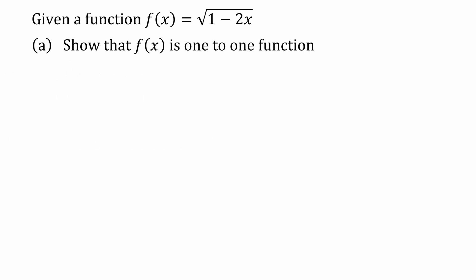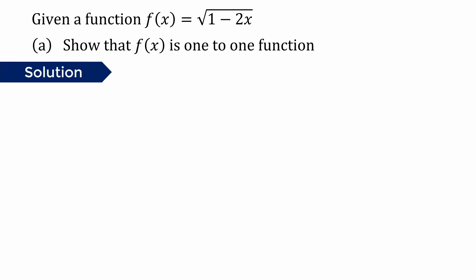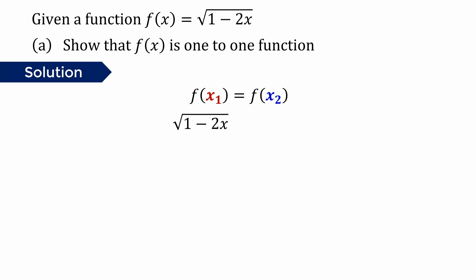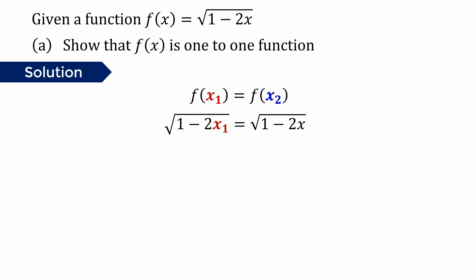For the first question, we're going to show that f(x) is a one-to-one function. To do that, we can use the equation f(x1) equals f(x2). So for the function square root of 1 minus 2x, we substitute x with x1 on the left hand side, and for f(x2) on the right hand side, we substitute x equals x2.